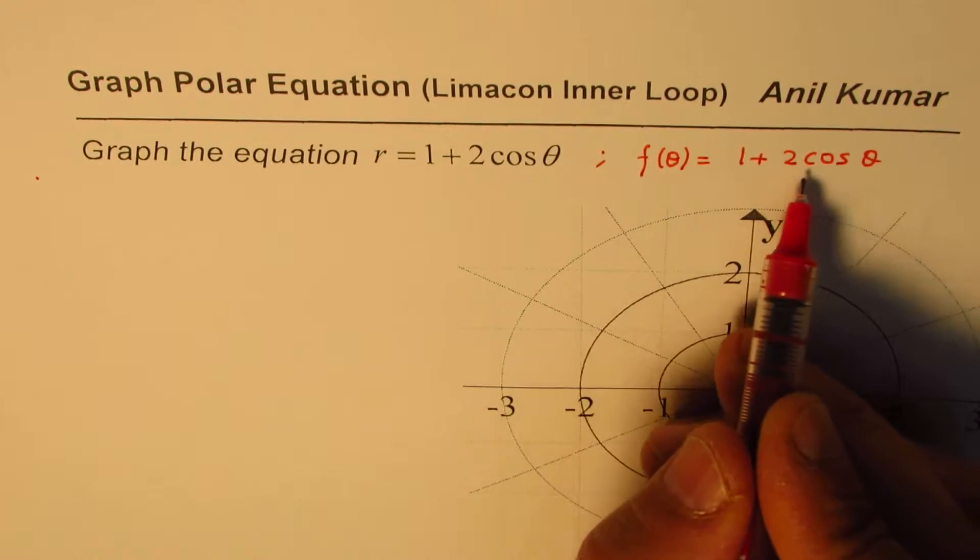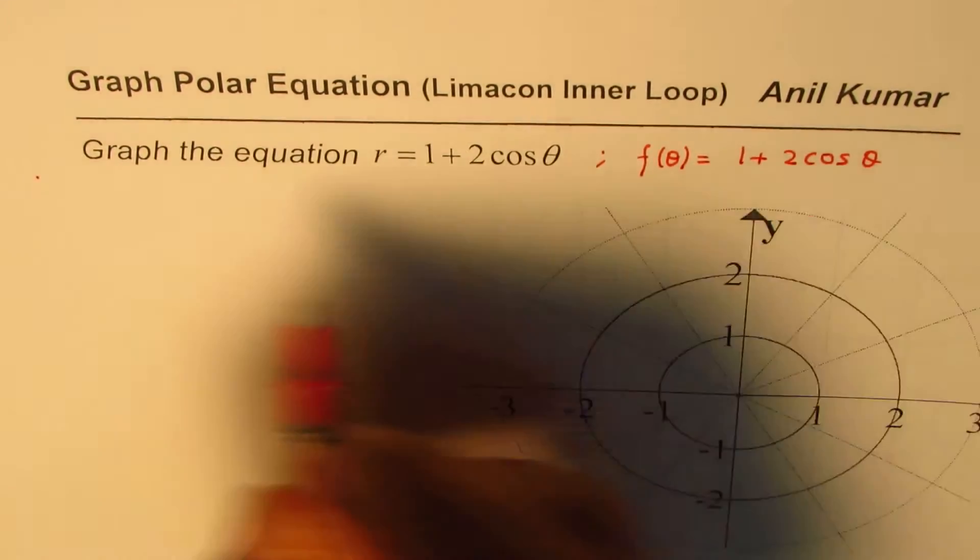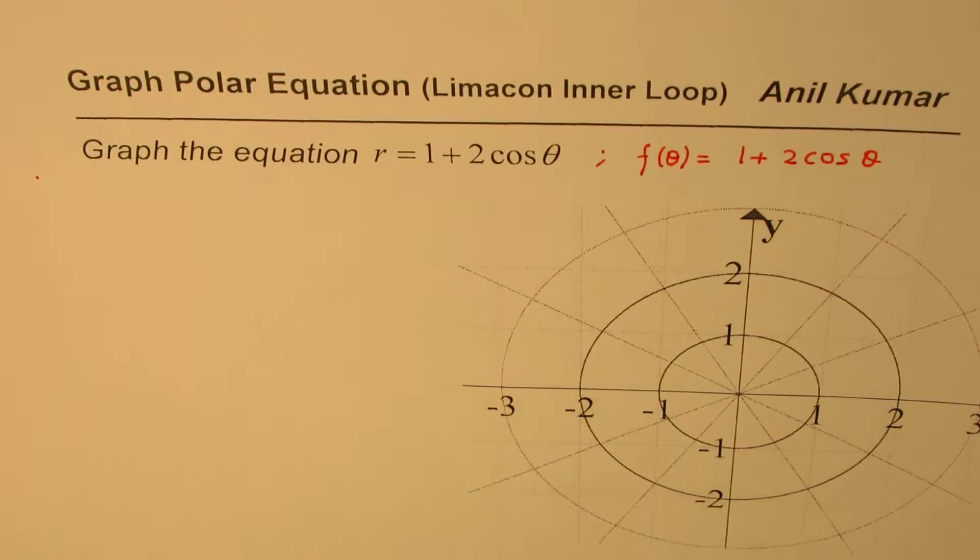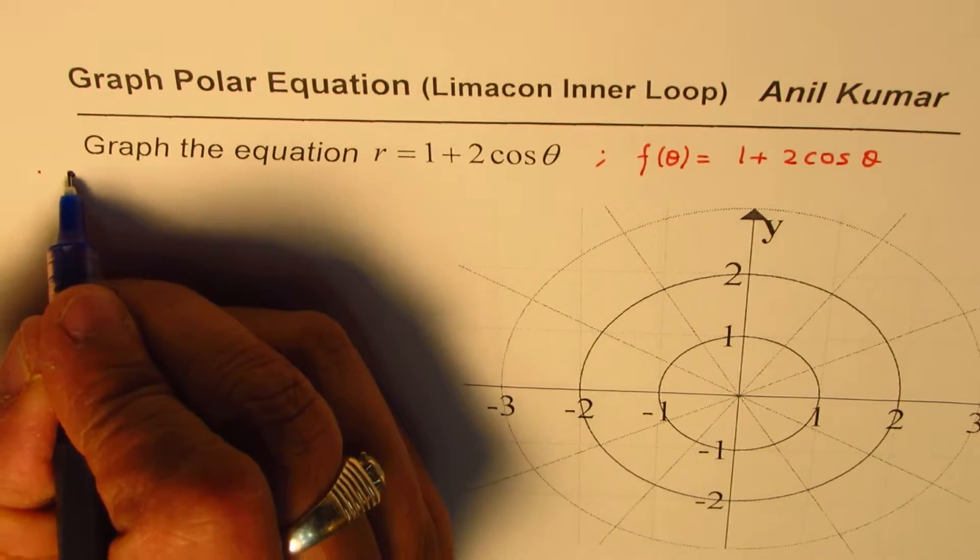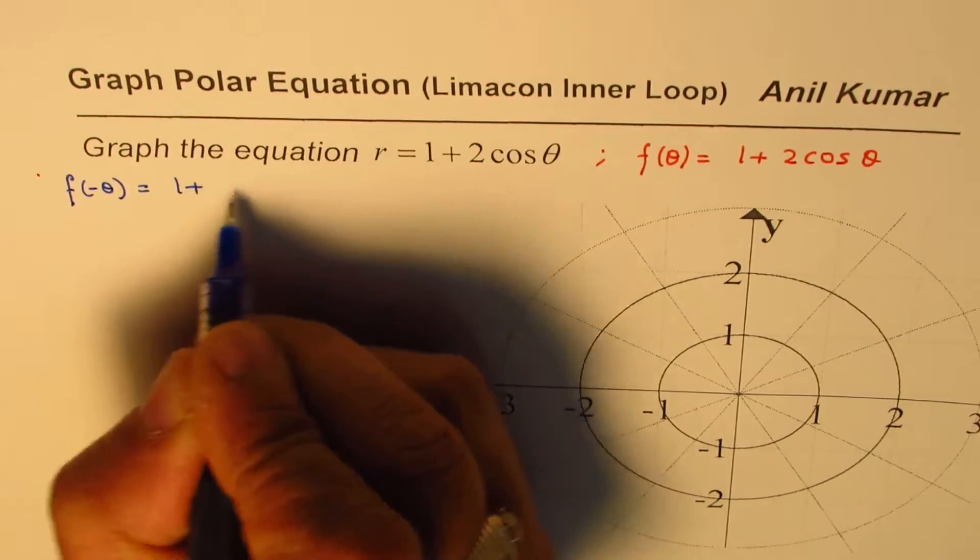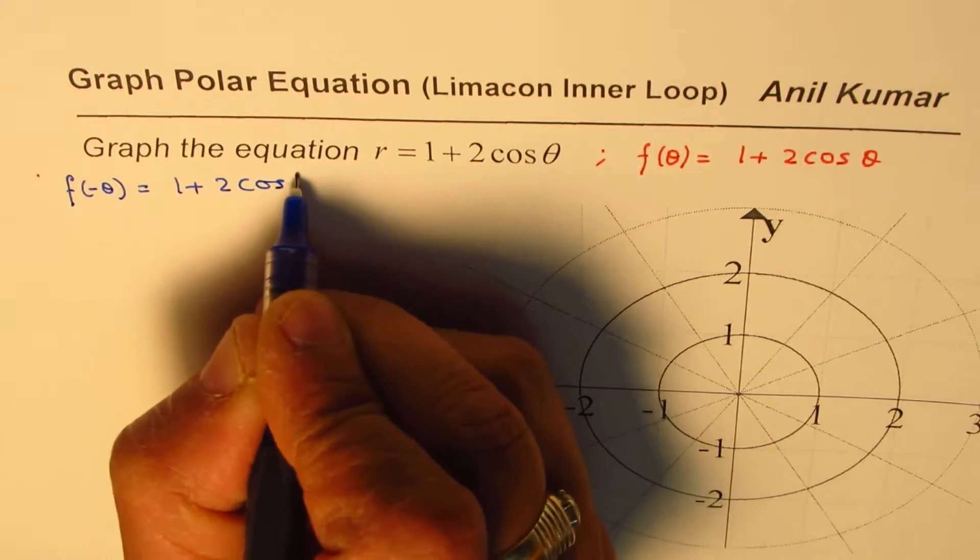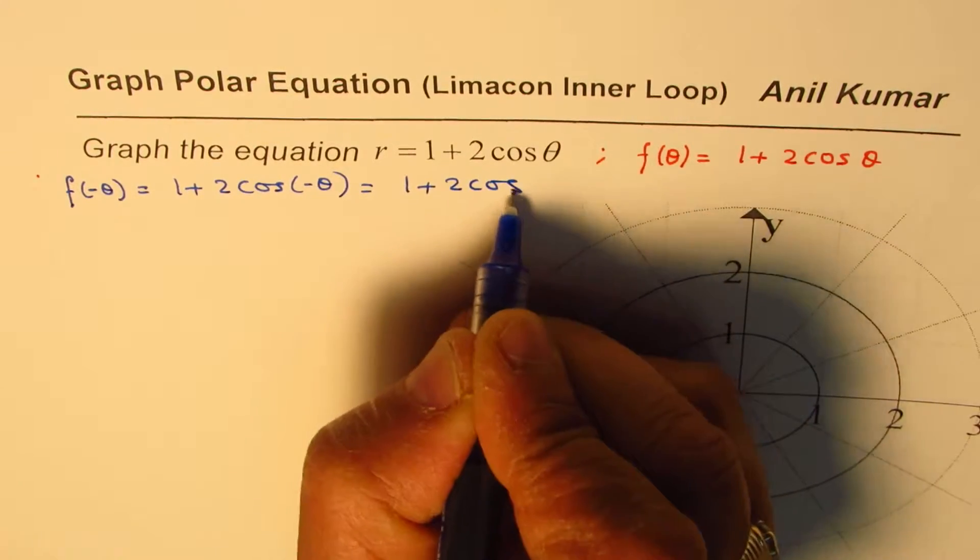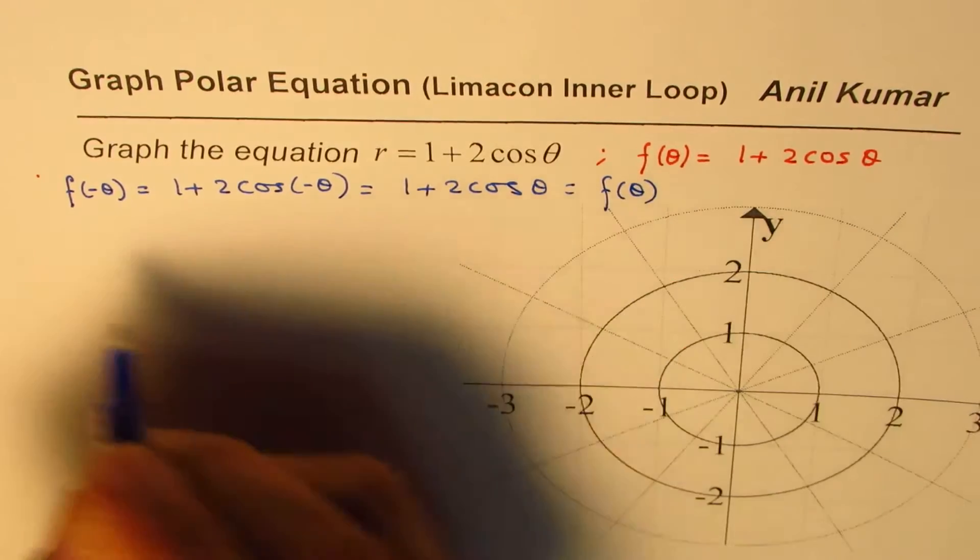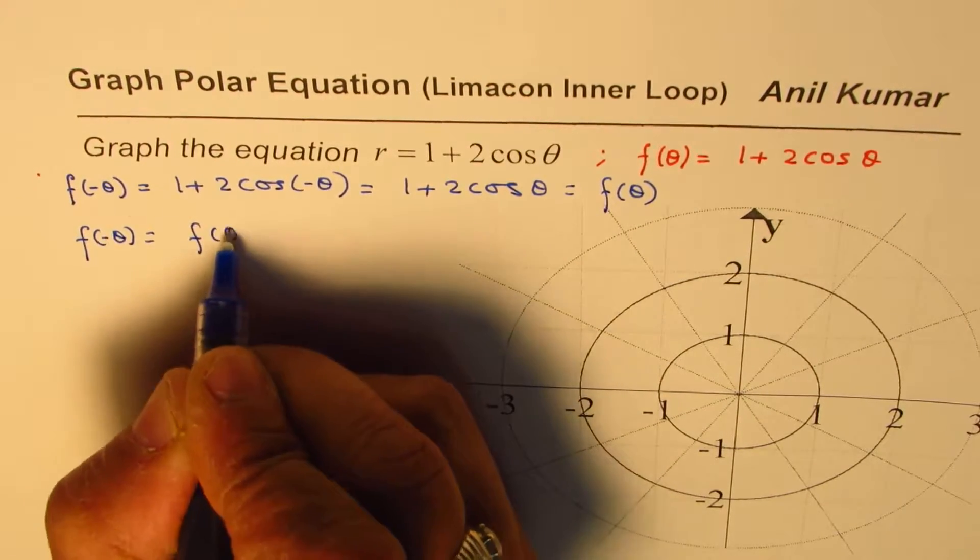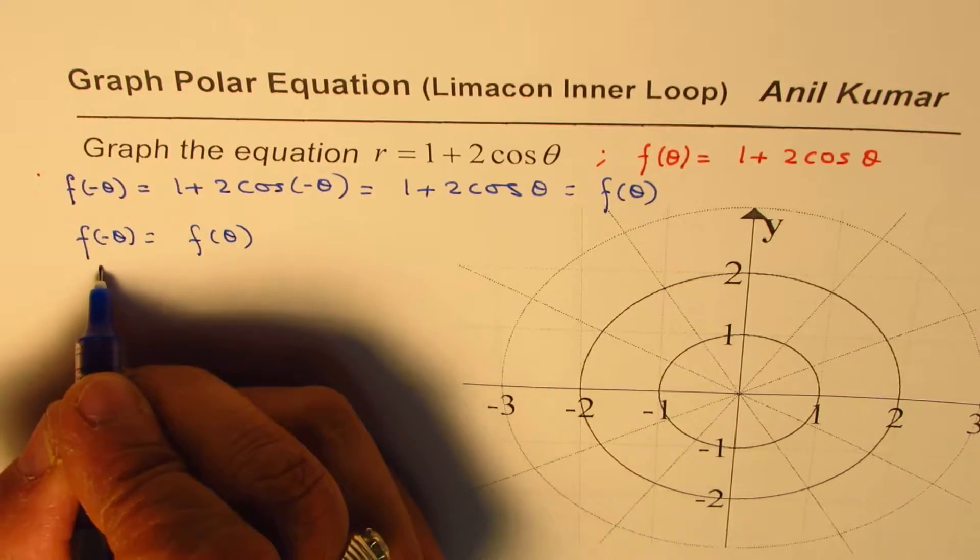Now, in this particular equation, if I replace theta with minus theta, what do I get? We know that cosine is an even function, so we should always try this symmetry. F of minus theta should be equal to 1 plus 2 cos of minus theta, that is indeed equals to 1 plus 2 cos theta, and that is f of theta. So that gives us that f of minus theta equals f of theta, and therefore, function is symmetric.